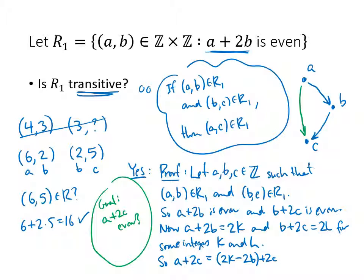a + 2c, this thing that I'm hoping to be even, well, I know that that's going to be 2k - 2b + 2c. I'm getting that from that first equation, but I can factor 2 out of that. So I get 2(k - b + c), and that's even, which is even.